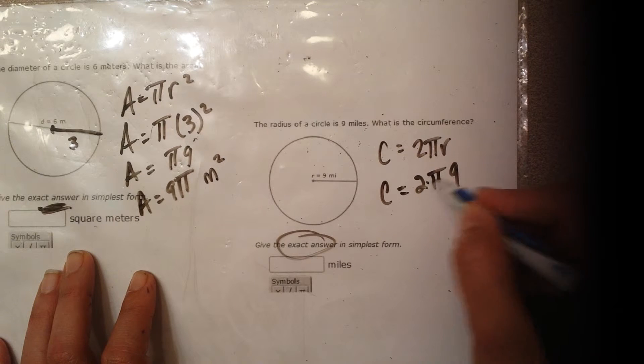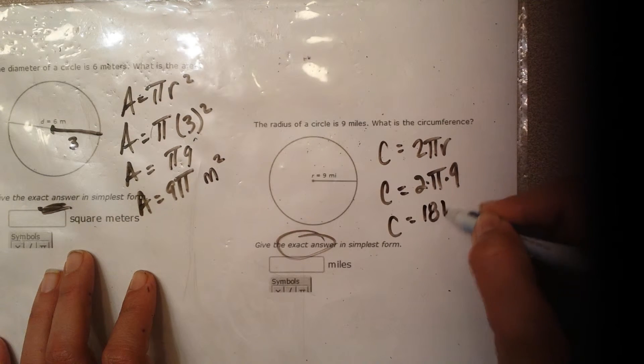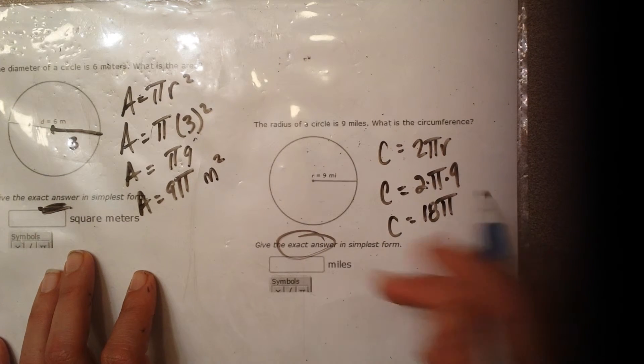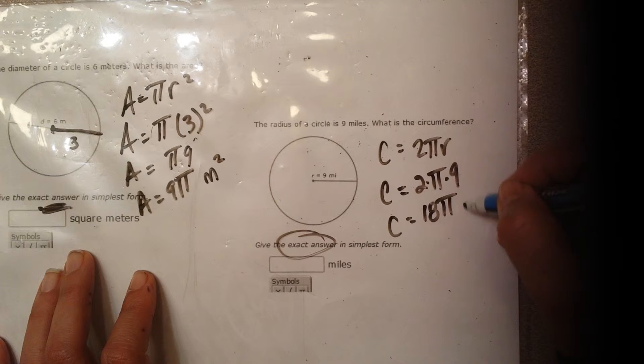Go ahead and simplify this because this is all multiplication. c is equal to 2 times 9, which is 18 pi. And circumference is another word for perimeter, but for circles. So the units are just whatever they are. So in this case, they're just miles.